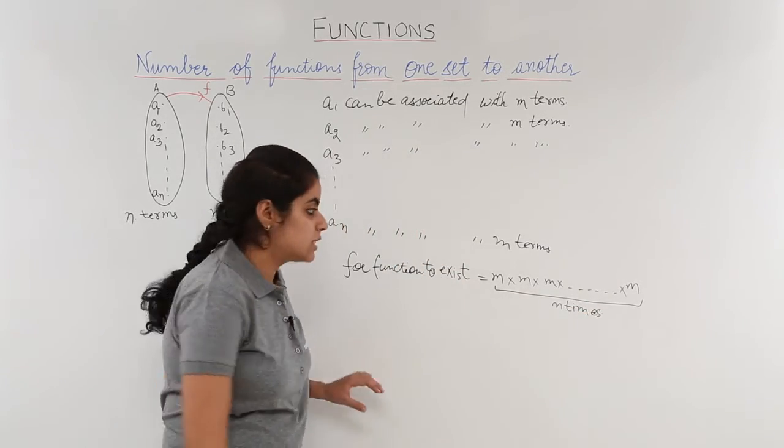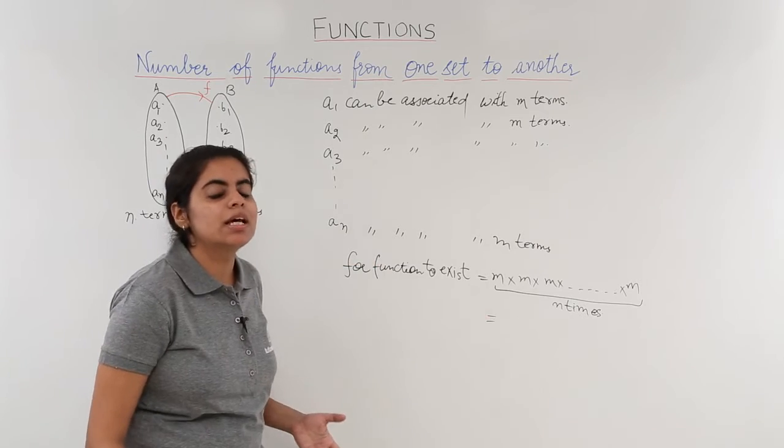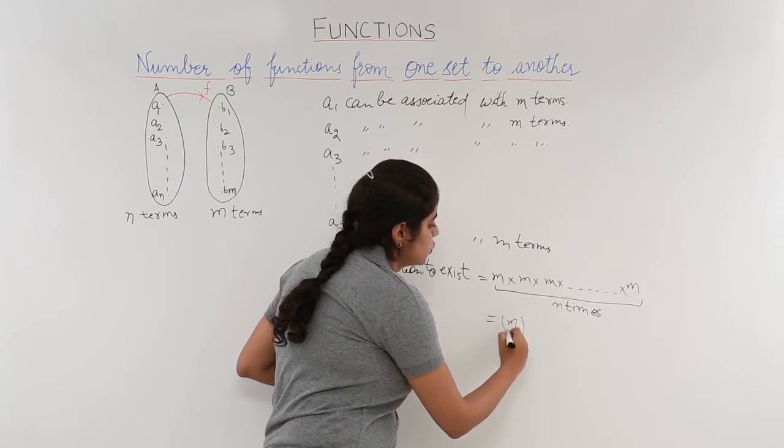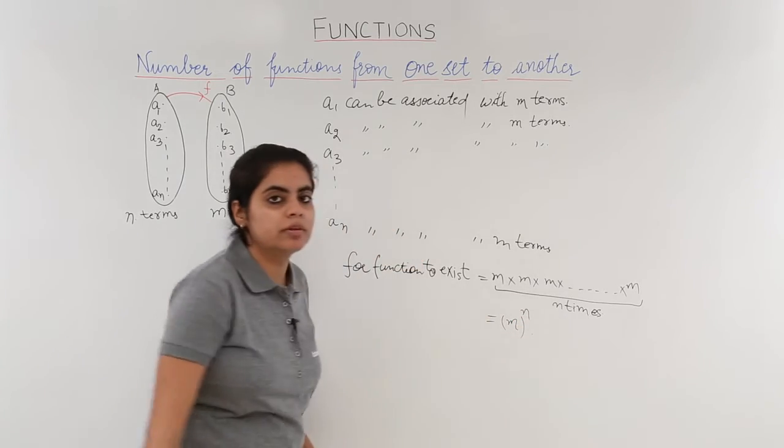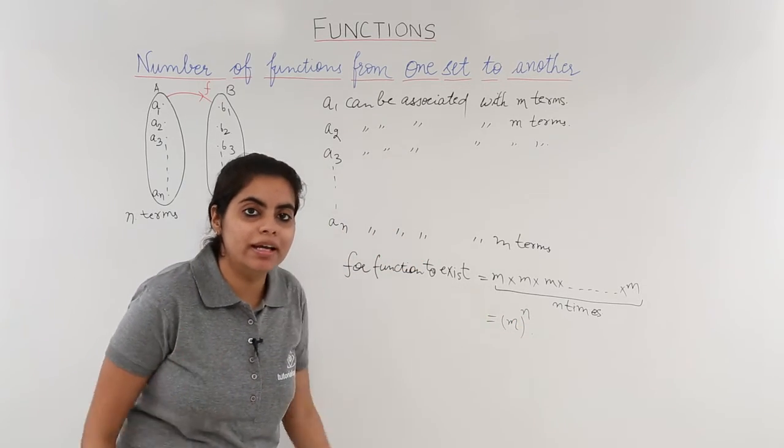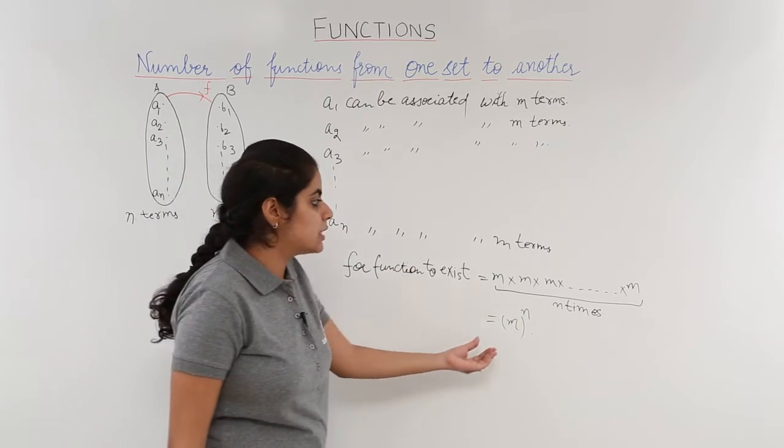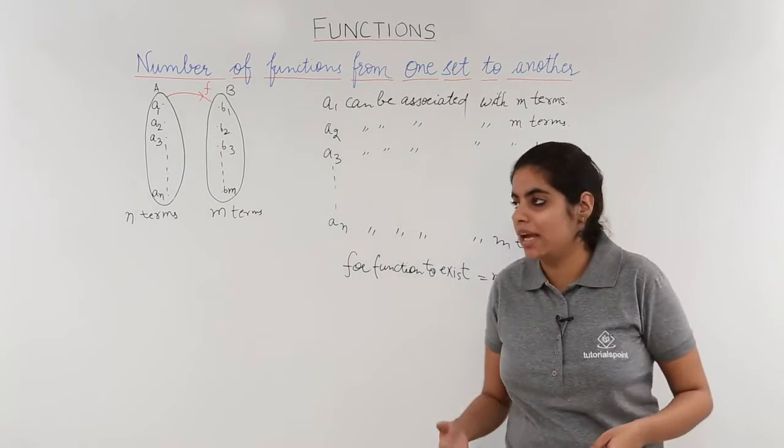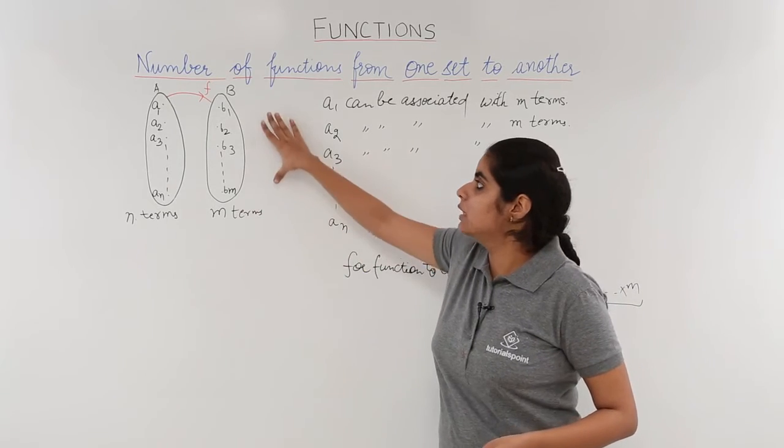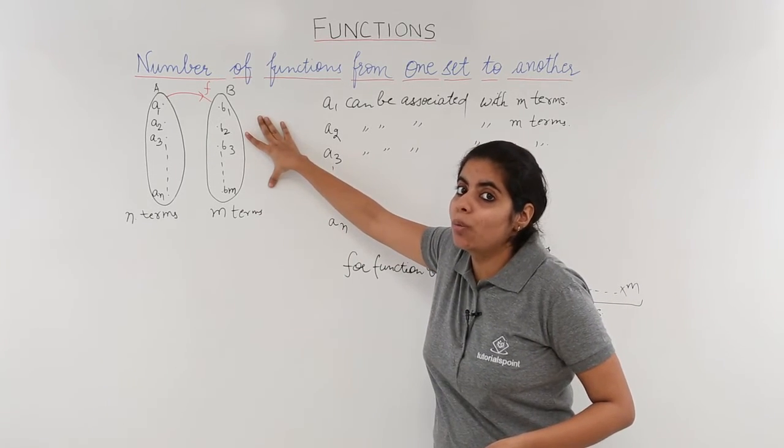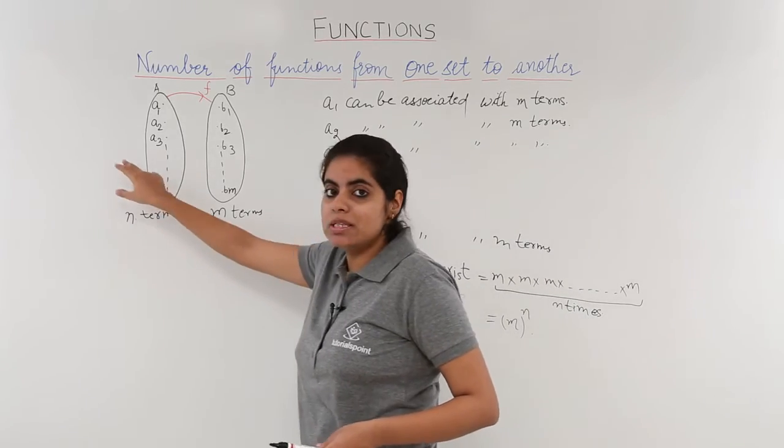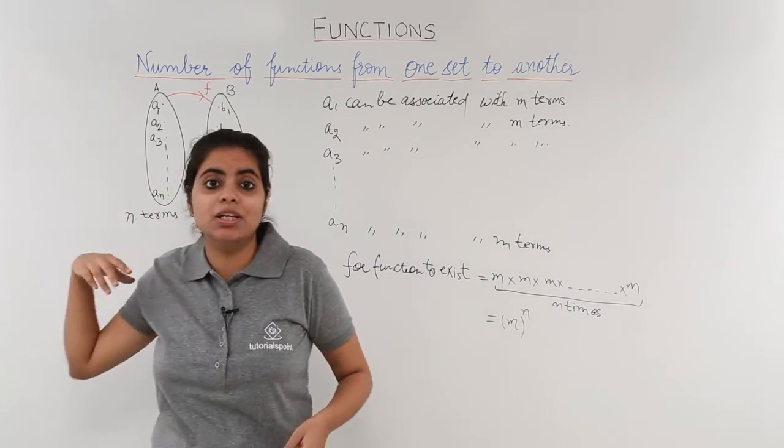That means M is multiplied how many times? That means M is multiplied to the power N. M to the power N. Now just let me know what was M and what was N. M was the number of elements in the codomain and N was the number of elements in the first set that means the domain.